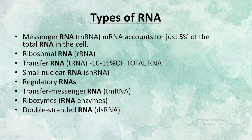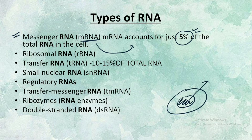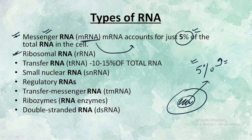Let's talk about the various types of RNAs. We have many types of RNA. The first one is messenger RNA, also called mRNA. mRNA accounts for only five percent of the total RNA in the cell. Then we have the second one as ribosomal RNA, or rRNA.